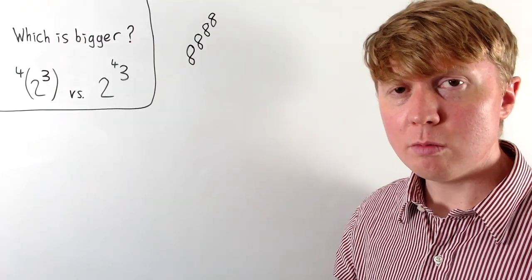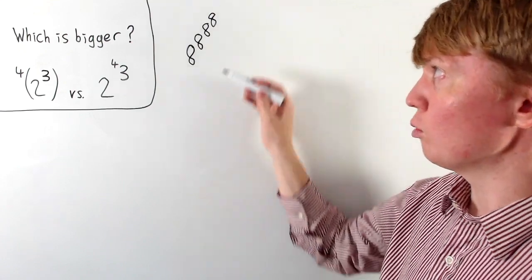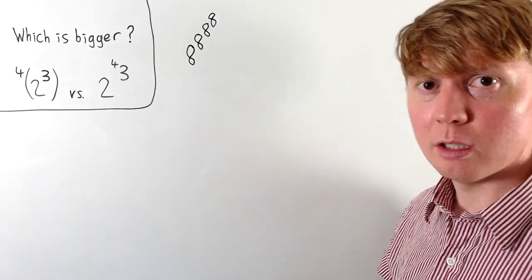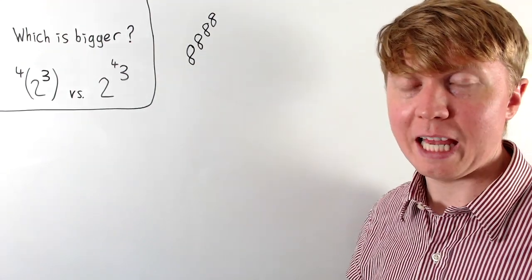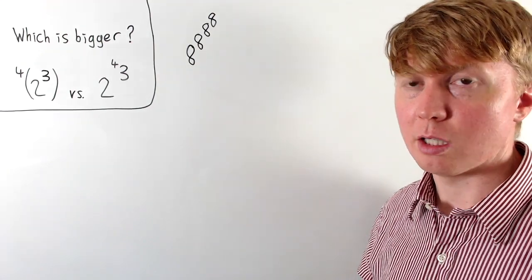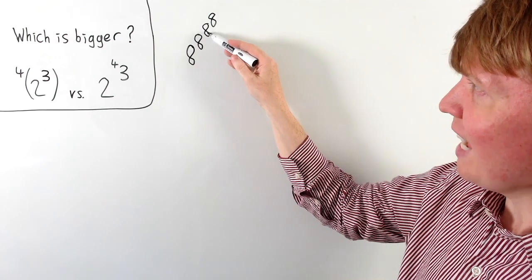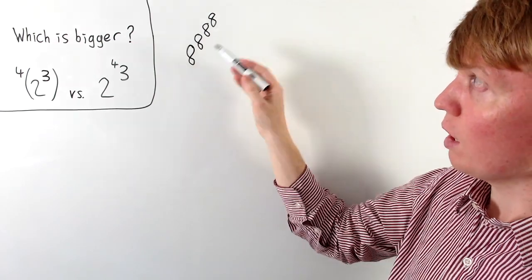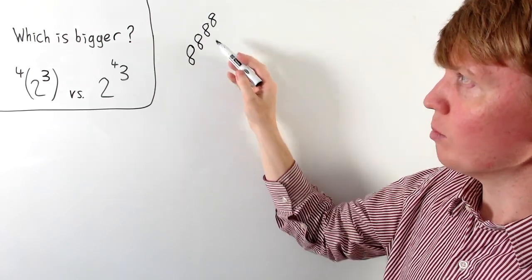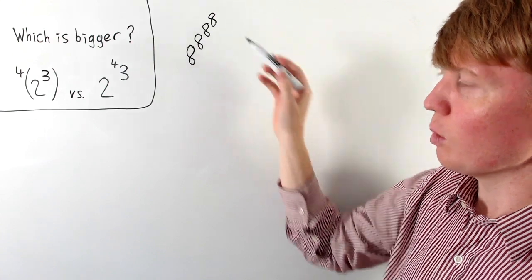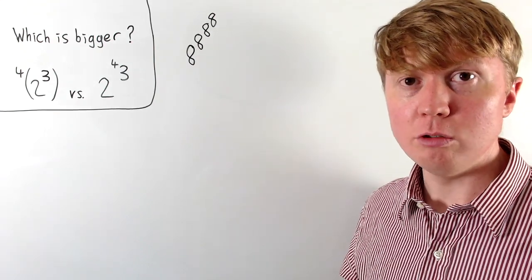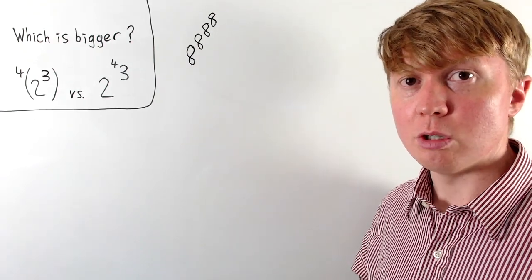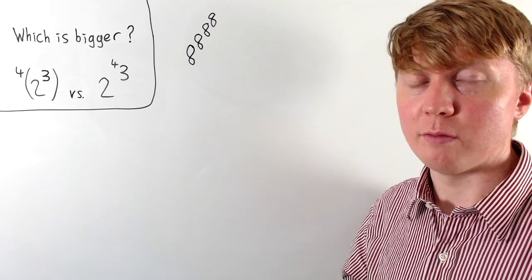Just to make it really clear, when we evaluate these, you always work from the top down. We would start by doing eight to the power of eight, then whatever that very big number is, we do eight to the power of that, and then whatever huge number we get, we do eight to the power of that.